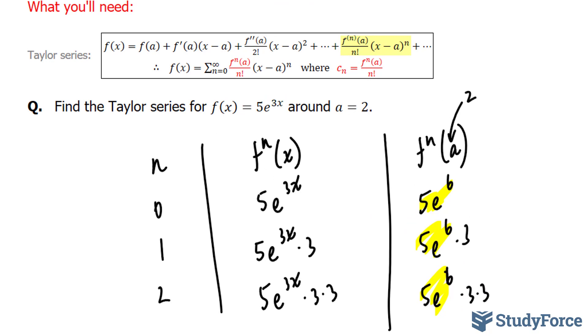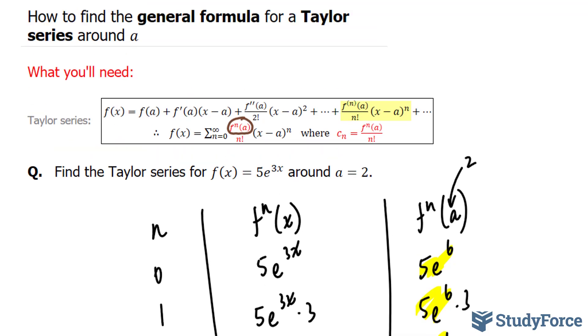So now we have f^(n)(a), and we're pretty much done. Let's write this down. 5e^(3x) = the sum, where n starts at 0, and we found this part to be 5e^6,